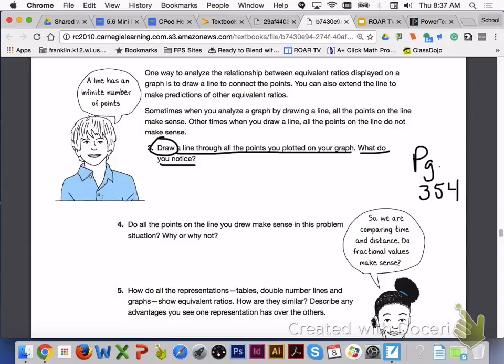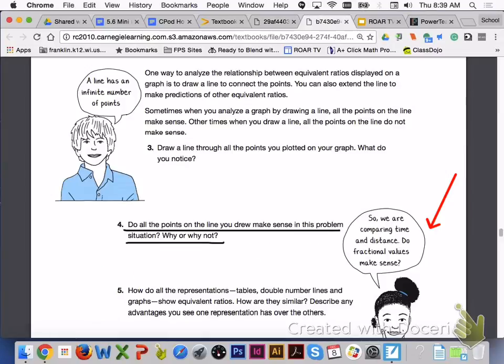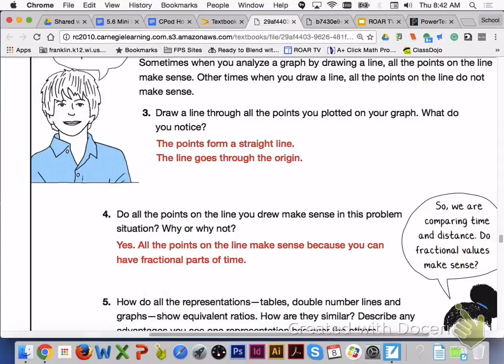Please answer number 3 with your group members and refer back to the graph on page 354. For number 3, when you draw a line through all the points that you plotted on your graph, the points are going to form a straight line. Please answer number 4 with your group members and remember to think if the fractional values make sense. For number 4, yes, all the points on the line do make sense because you can have fractional parts of time.